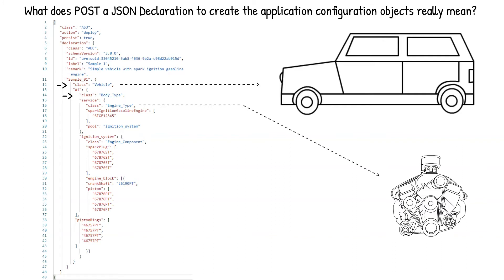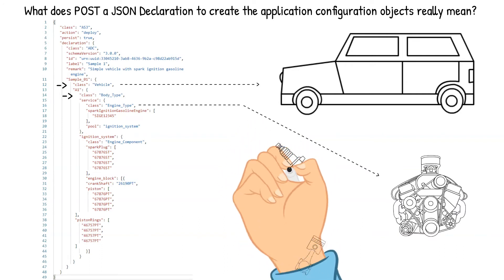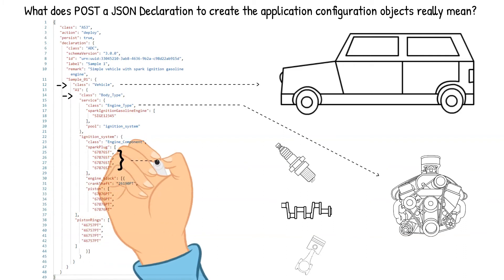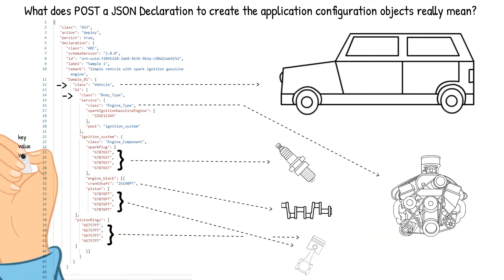There are many components that are attached to an engine and are needed for it to run, just like there are many configurations needed for an application to run. For instance, there are spark plugs, pistons, and a crankshaft, all encapsulated within the engine. Think of the engine components being a pair — part name and part number — whereas the application components would be a key and value pair.